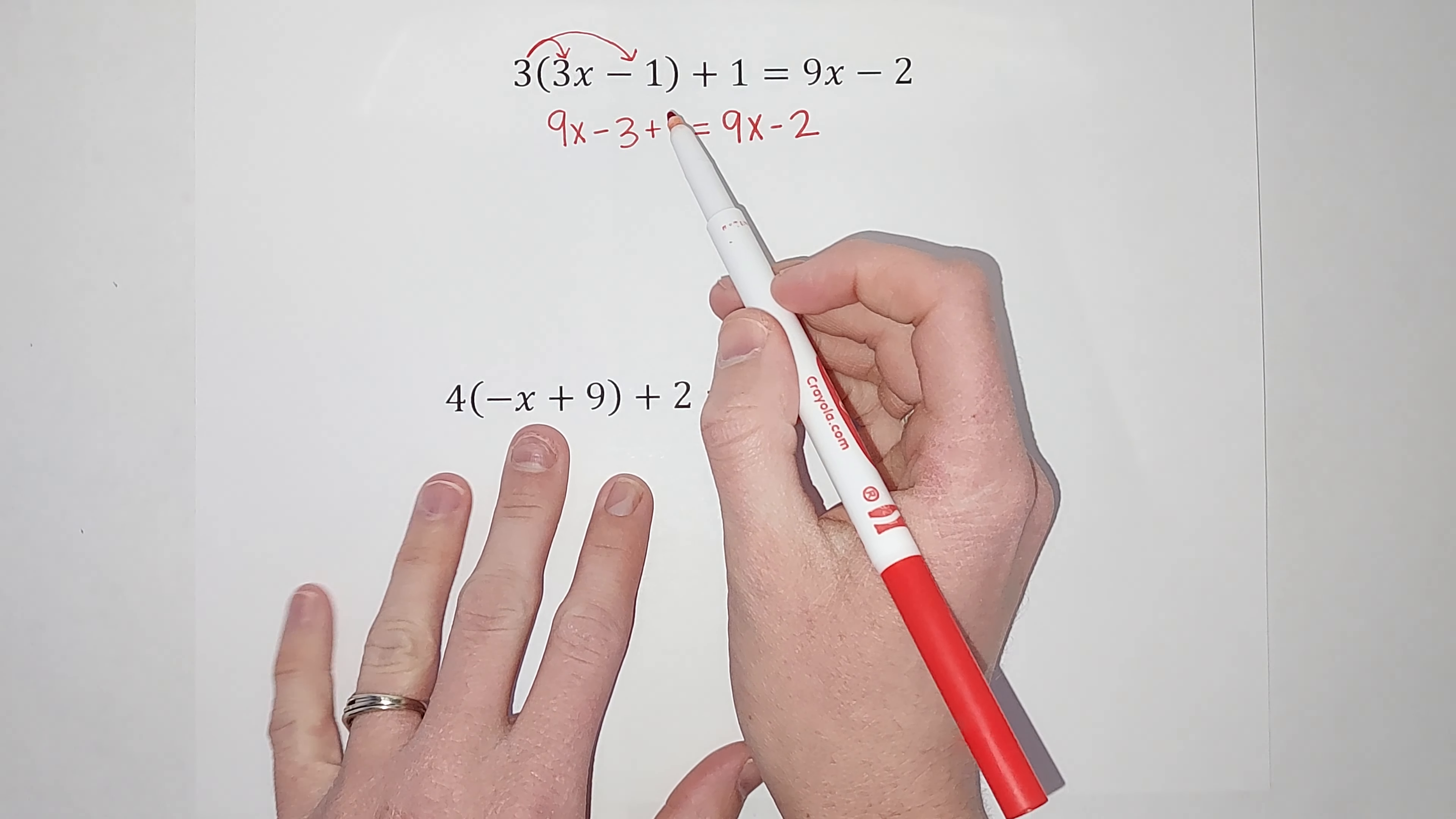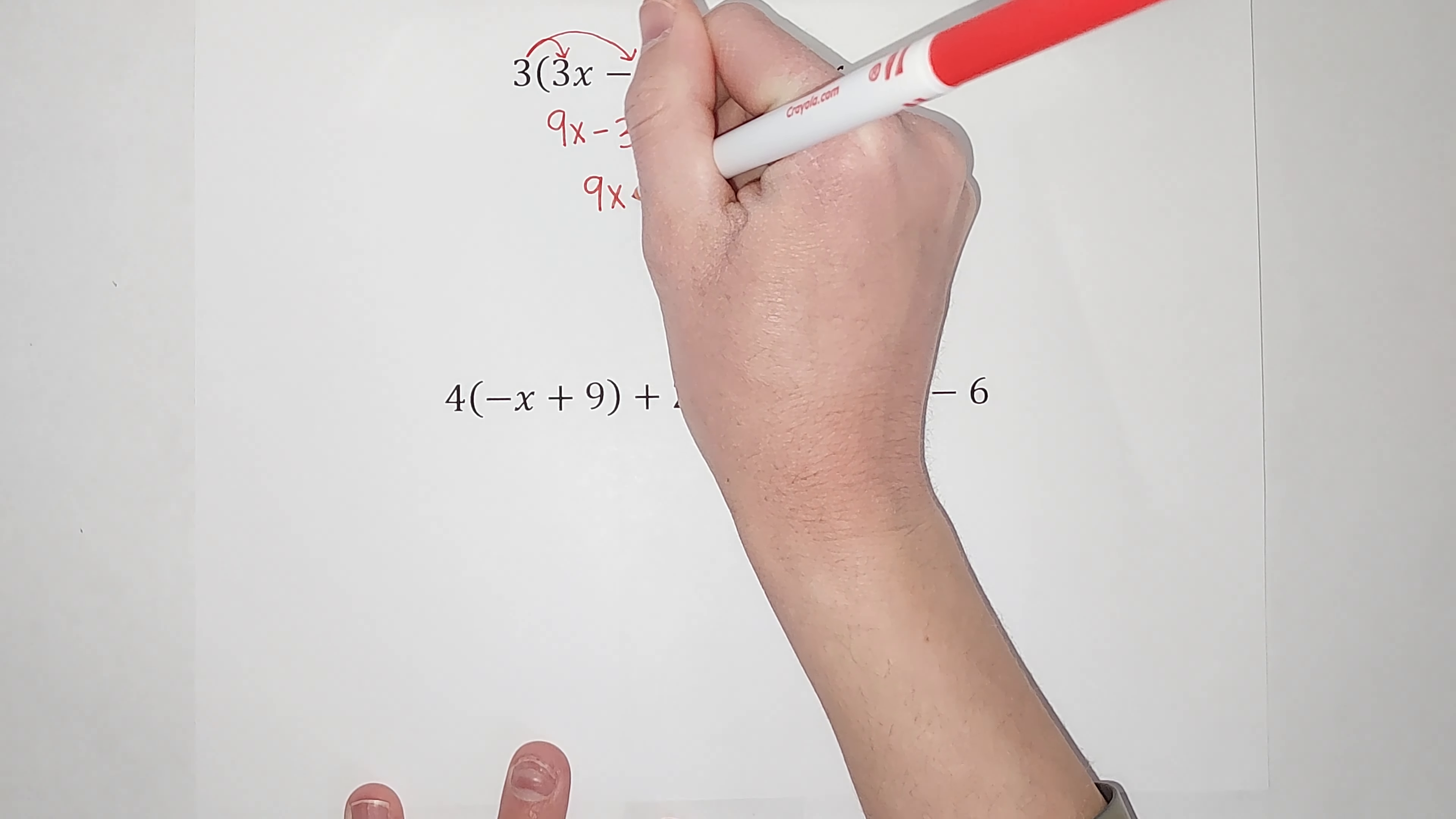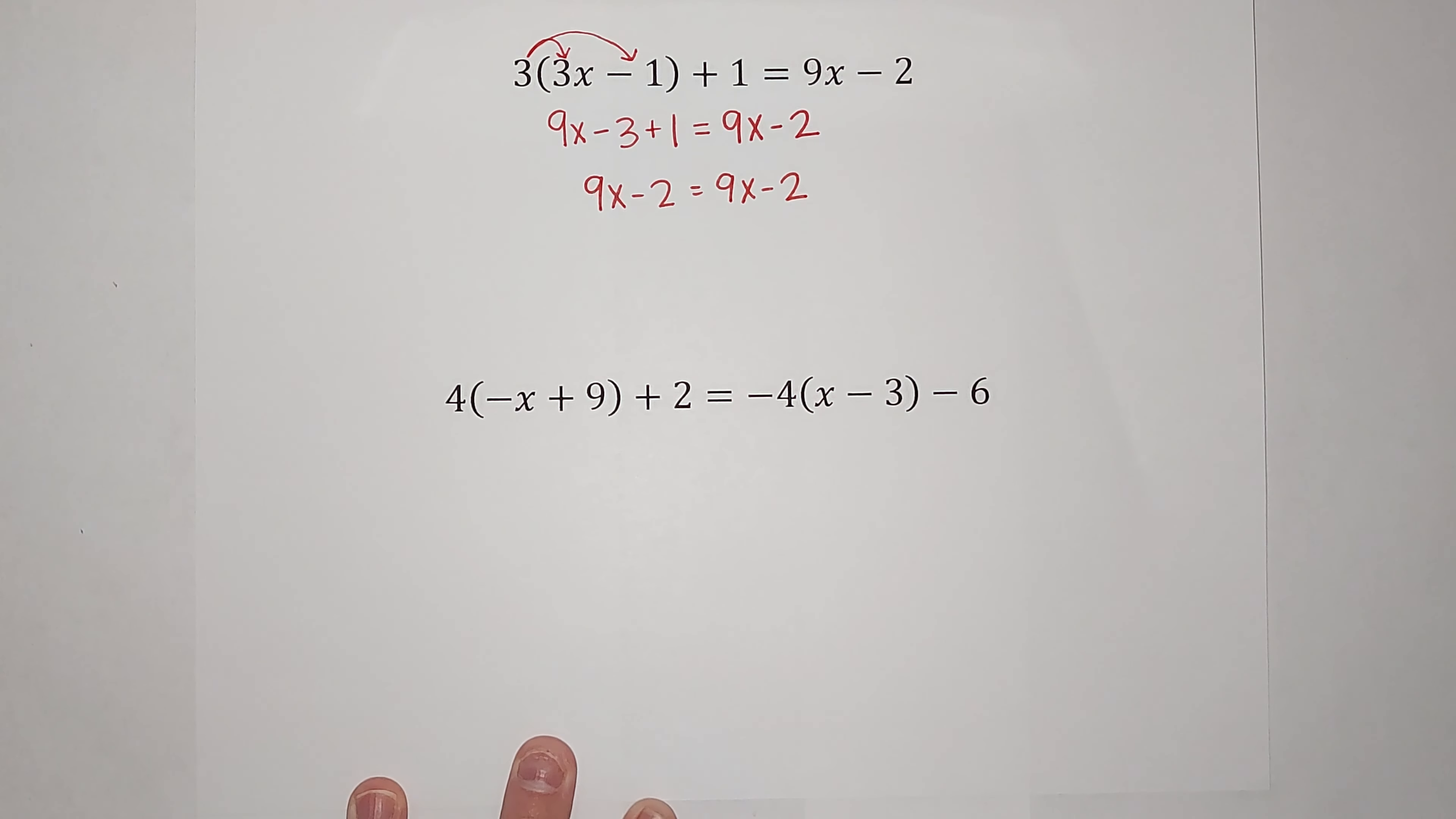All right. I'm going to combine like terms. So negative 3 plus 1 gives me negative 2. So 9x minus 2 equals 9x minus 2. Uh-oh. What's happening here?